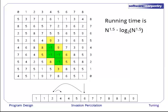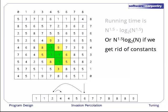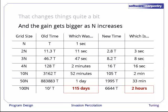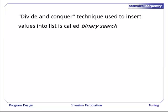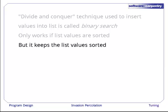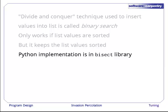The first n to the 1.5 is the number of times we fill a cell, and log base two of n to the 1.5 is the number of steps it takes each time we fill a cell to find the right place to insert. Now, if we take out the constants, we wind up with n to the 1.5 times log two of n, because of course log two of n to the 1.5 is just 1.5 times log two of n. This changes things quite a bit. Let's highlight the greatest values in each column. What was a running time of 115 days has become a running time of two hours. What's more, as n gets bigger, the ratio gets bigger as well. The divide and conquer technique we use to insert values into a list is called binary search. Now, it only works if the list values are sorted, but it keeps the list values sorted, and there's a Python implementation of this in the bisect library.